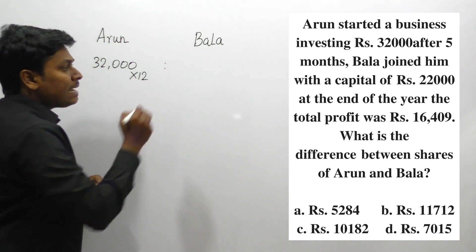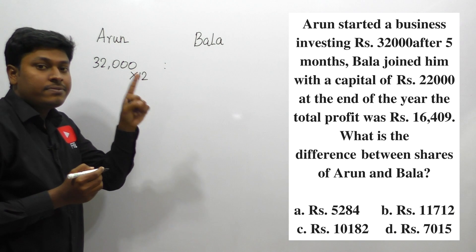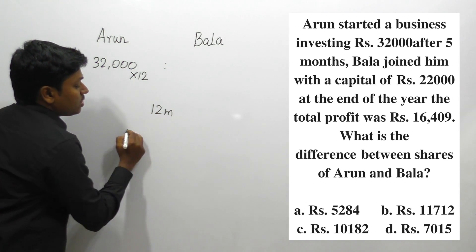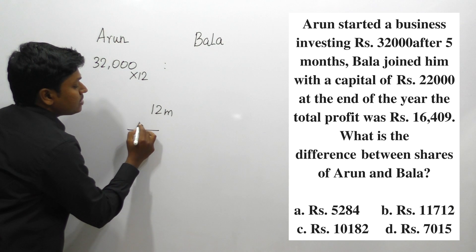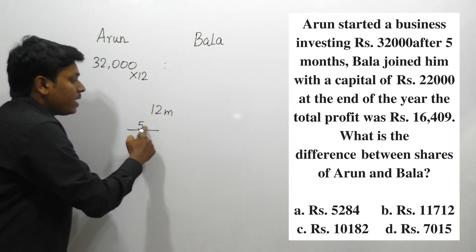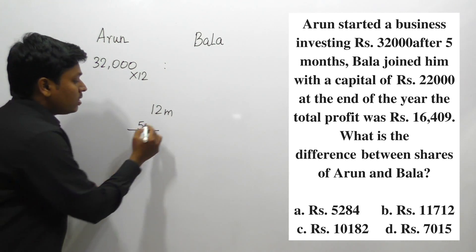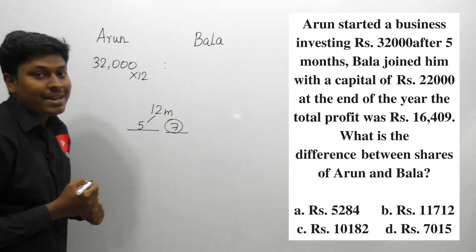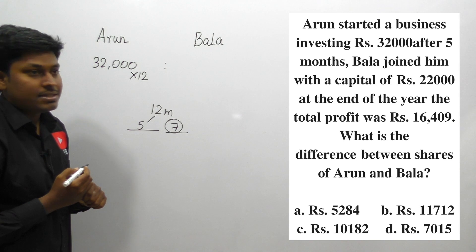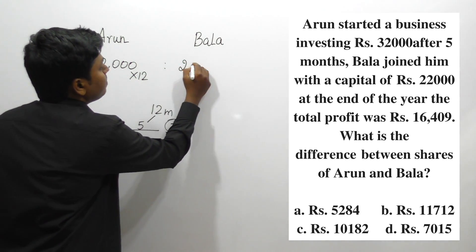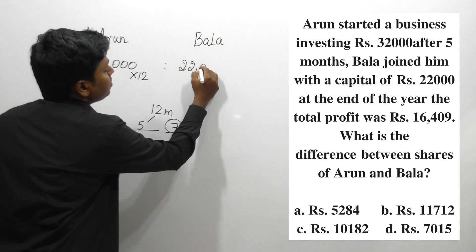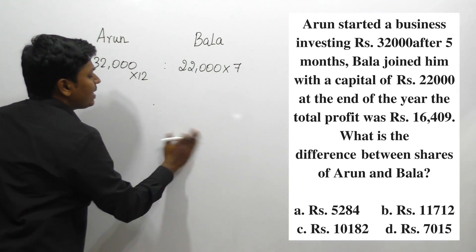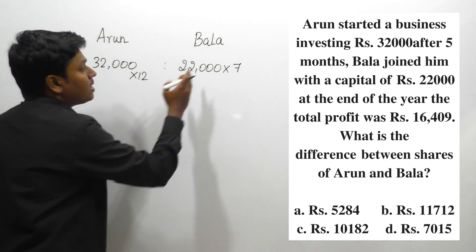The second person, Bala, joined after five months. Since one year is 12 months, Bala was not in the business for the first five months. So 12 minus 5 equals 7 — Bala will be in the business for the remaining 7 months. Bala is investing 22,000 rupees, so his contribution is 22,000 into 7.